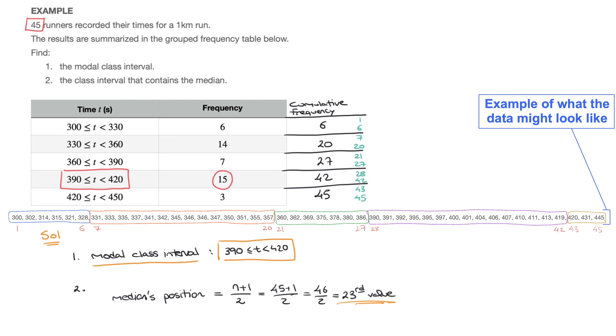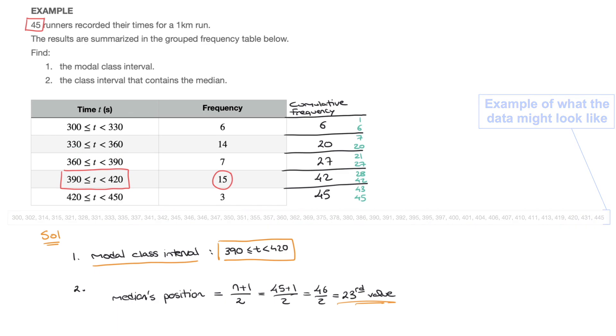Because let's say for a second we were asked which class interval does the 10th fastest runner lie in. Well, technically I'd be looking for the 10th value in the long list of 45 times recorded, written in increasing order. But thanks to these digits on the side here, I can tell right away that the 10th value would be on this row right here, since it corresponds to the values between the 7th value and the 20th value included. So the 10th value would definitely be there, and we could say that the 10th fastest runner took between 330 and 360 seconds. More importantly to us right now, though, we know that the median's position is the 23rd value.